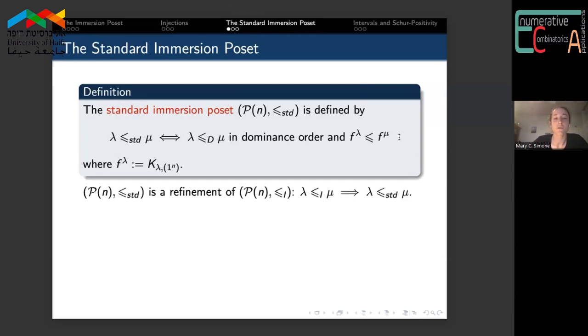Our standard immersion poset is a refinement of the immersion poset, meaning that there's more edges in the Hasse diagram or more relations. Because of this, all of the maximal elements in the standard immersion poset are also maximal in the immersion poset.